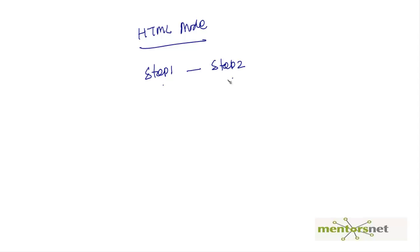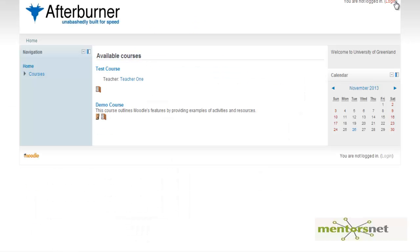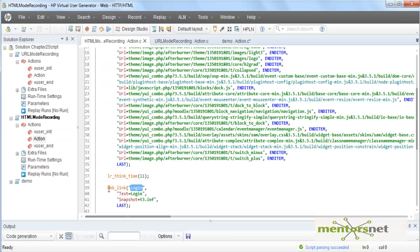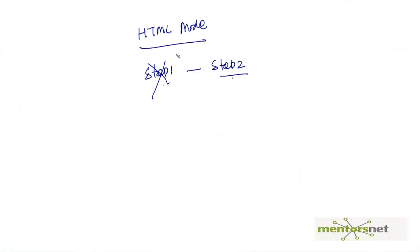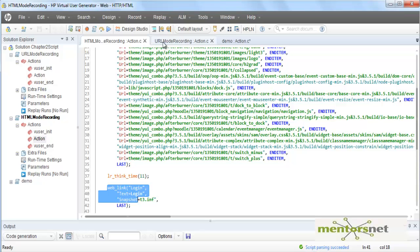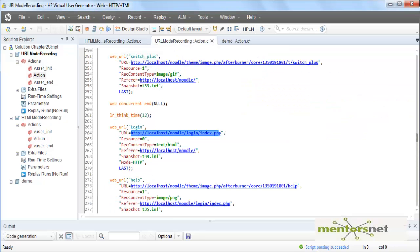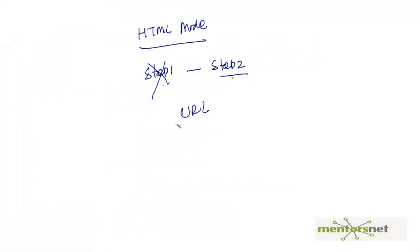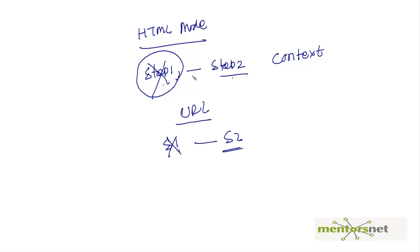In HTML mode, step 1 and step 2 are dependent — if step 1 fails and VUgen does not find the login link, then step 2 (web_link login) will also fail. This is called context sensitive, because VUgen at runtime parses the result of step 1 to take the next action. In URL mode, step 1 and step 2 are completely independent and context insensitive.